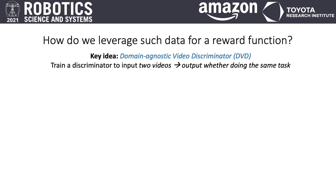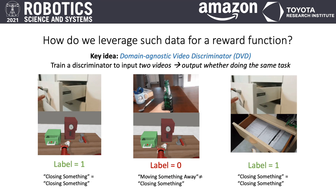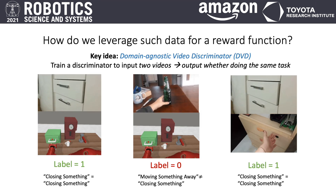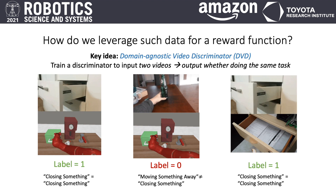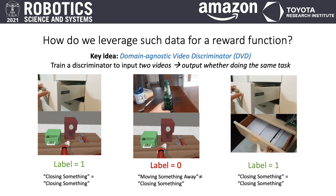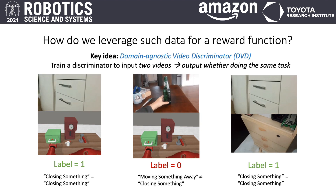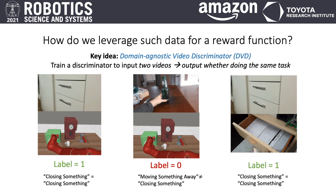The key idea to our approach, which we call Domain Agnostic Video Discriminator, or DVD, is to train a discriminator that looks at two videos and determines their functional similarity. We train the discriminator to predict one if two videos are doing the same task, and zero if they are completing different tasks. We do assume access to task labels for the videos in our training set.